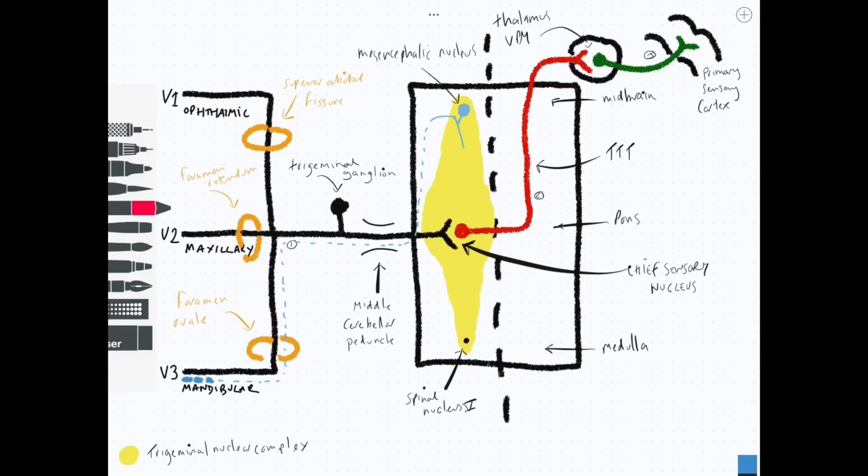The interesting thing about the mesencephalic nucleus is that no synapses actually take place there. It's the equivalent of a dorsal root ganglion but inside the central nervous system, so it's still a pseudounipolar neuron, but the cell body happens to be inside the central nervous system. Synapse does take place shortly afterwards, and conscious proprioception can join the TTT, as you can see on the diagram.